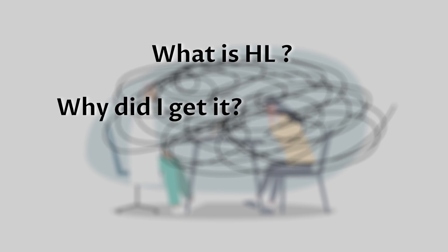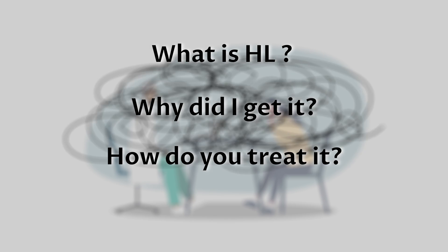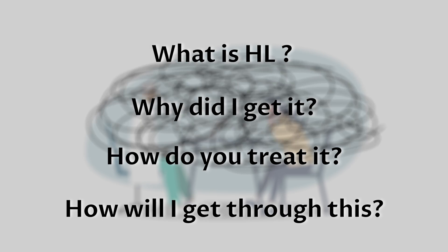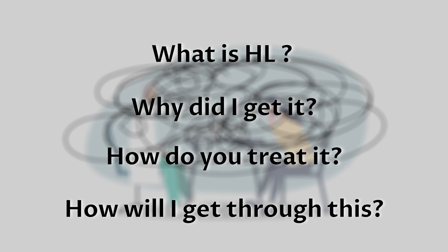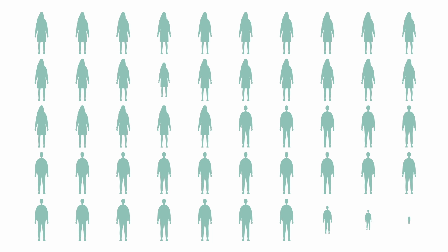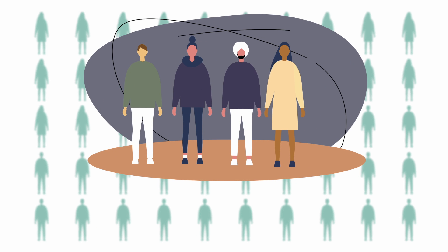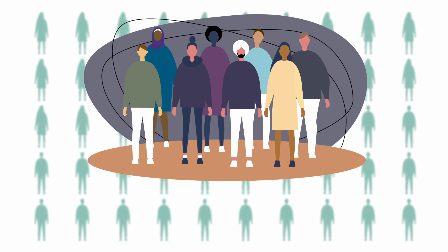What is HL? How did I get it? How do you treat it? How will I get through this? Hodgkin lymphoma, or HL, is a form of cancer that typically affects young adults between the ages of 15 and 34, and older adults over 65, though it can occur at any age and is slightly more common in males than females.